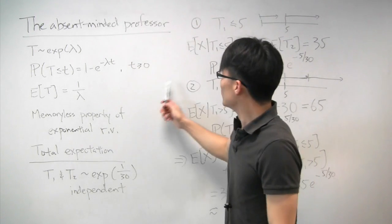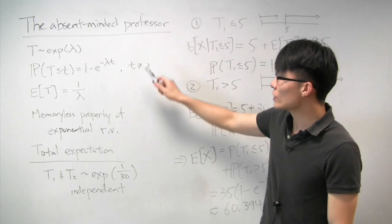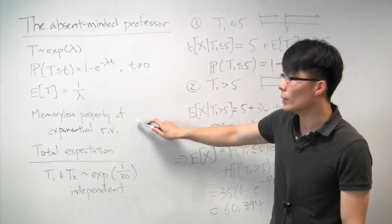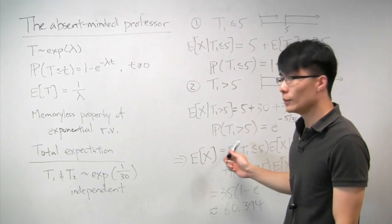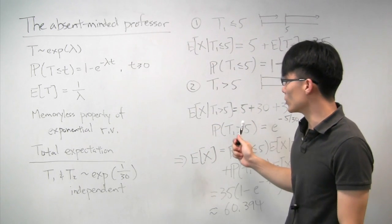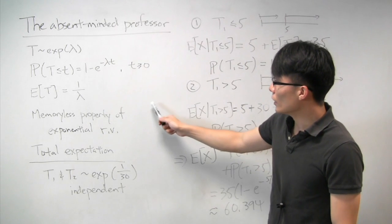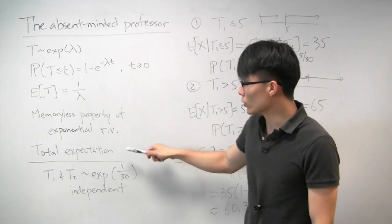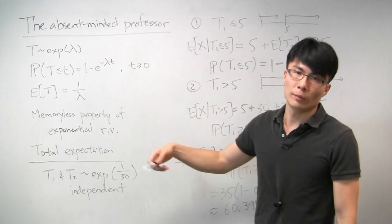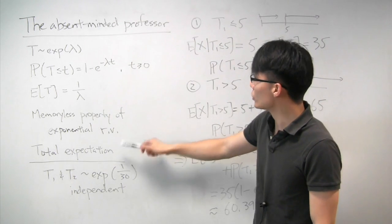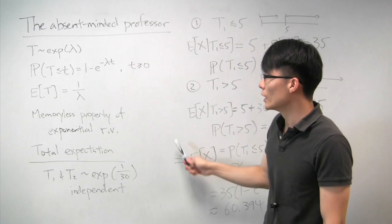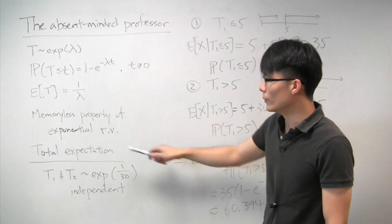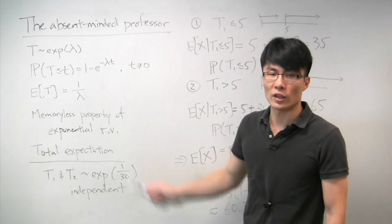This is a nice problem to get more practice with exponential random variables, and it nicely illustrates the memoryless property, which was key to solving it. It also reviews a useful tool we've been using throughout the course: splitting things into different scenarios, solving the simpler problems first, and then combining them using total expectation.